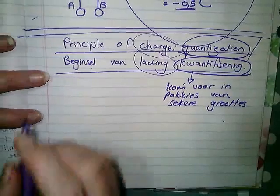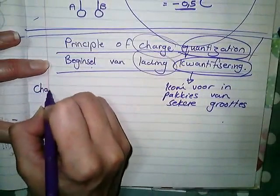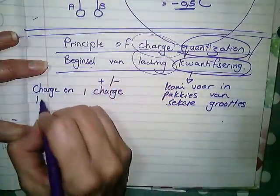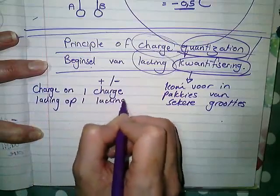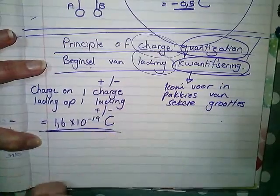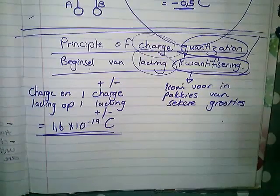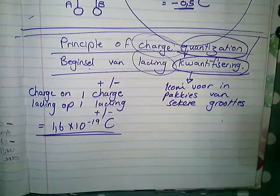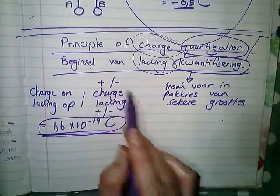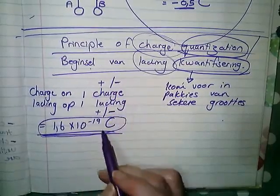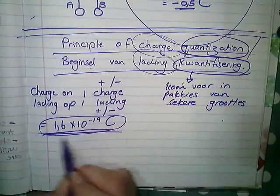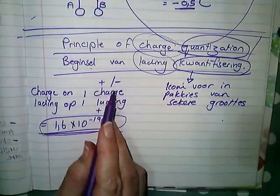Now the charge on one charge, and that can be either a positive charge or a negative charge, die lading op een lading, is 1.6 × 10^-19 coulomb. That's the charge on one charge. So if you have one single electron that's being moved, you are moving 1.6 × 10^-19 coulomb because that's the size of that little packet. As jy 1 elektron skuif of bykry of verloor, dan skuif jy, verloor of kry by 1.6 × 10^-19 coulomb want dit is hoe groot 1 pakkie lading is.